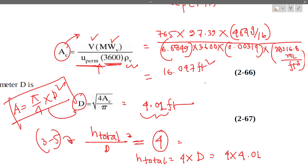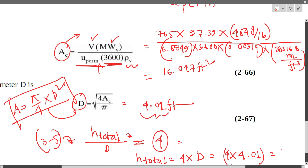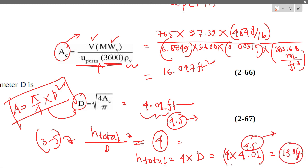We now proceed to find the drum size. Going to page 4.5 of the design, we will get a diameter of approximately 4.5 feet. From the cross-sectional area, we can back-calculate the drum diameter.